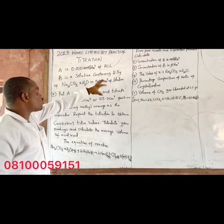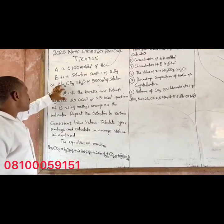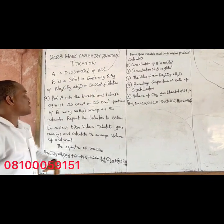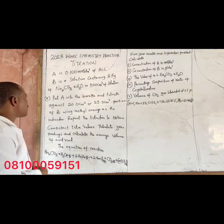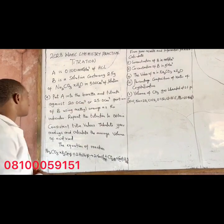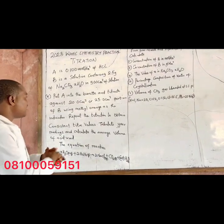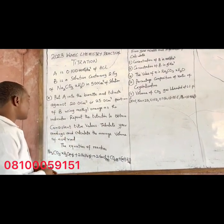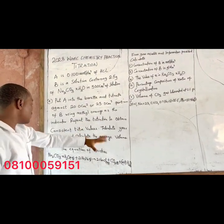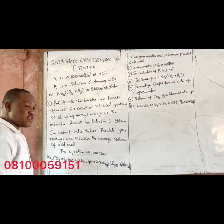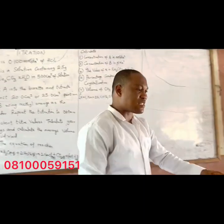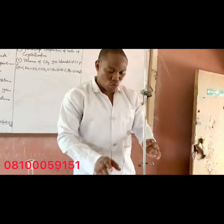B is a solution containing 2.5 grams of sodium trioxocarbonate·xH₂O in 500 cm³ of solution. Put A into the burette and titrate against 20 or 25 cm³ portions of B using methyl orange as the indicator. Repeat the titration to obtain consistent titre values. Tabulate your readings and calculate the average volume of acid used.